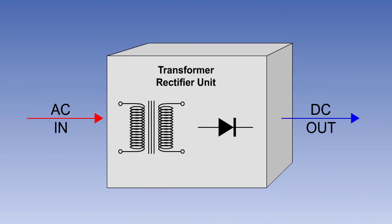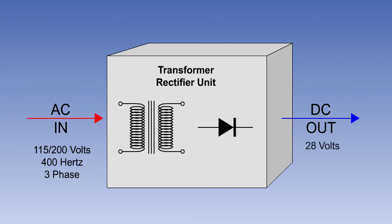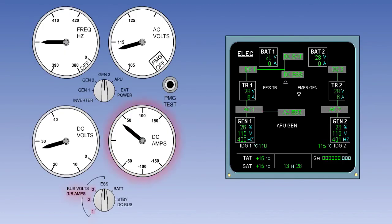Transformer rectifier units, or TRUs, convert AC at one voltage to DC at another voltage in order to supply the DC needs of an aircraft with an AC distribution system. The TRU combines the transformer and rectifier in one unit. The input supply is usually 115/200 volts, 400 hertz, three-phase AC, and the output 28 volts DC. The TRU current output can normally be monitored by the pilot, either on a gauge or an electronic screen.